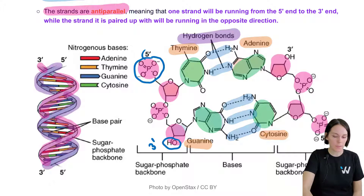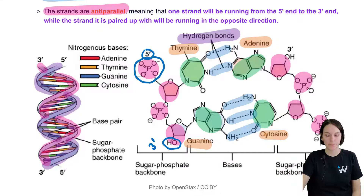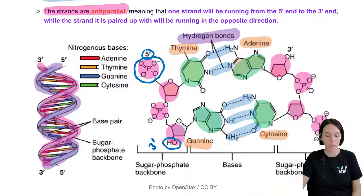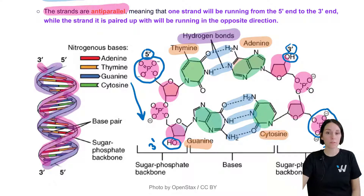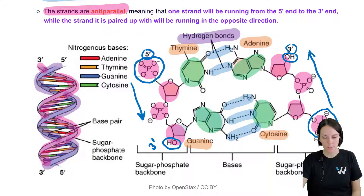The other end has a free hydroxyl group, so that is the three prime end. This strand runs five prime to three prime. The strand it's paired to, because it's anti-parallel, runs in the opposite direction — the free phosphate group is at the other end, making that the five prime end, and the free hydroxyl group is at the top, making that the three prime end. So they are anti-parallel and complementary.